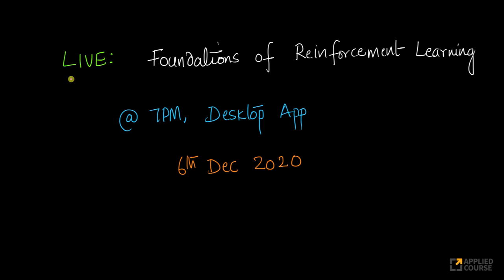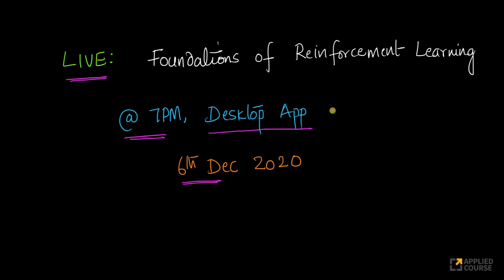Hi friends, our next live session for all of our AI students will be on the coming Sunday, which is the 6th of December, from 7pm to 9pm. This live session will be accessible to all of our course enrolled students via the desktop app, and as usual, we will use Slack for all the communication during the live chat itself.